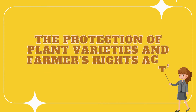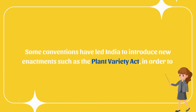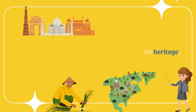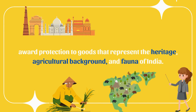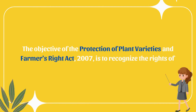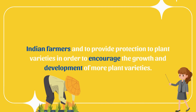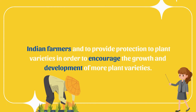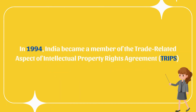Plant Varieties Act: The Protection of Plant Varieties and Farmers' Rights Act 2001 — some conventions led India to introduce new enactments such as the Plant Variety Act in order to award protection to goods representing the heritage, agricultural background, and fauna of India. The objective of the Protection of Plant Varieties and Farmers' Rights Act is to recognize the rights of Indian farmers and to provide protection to plant varieties in order to encourage the growth and development of more plant varieties.